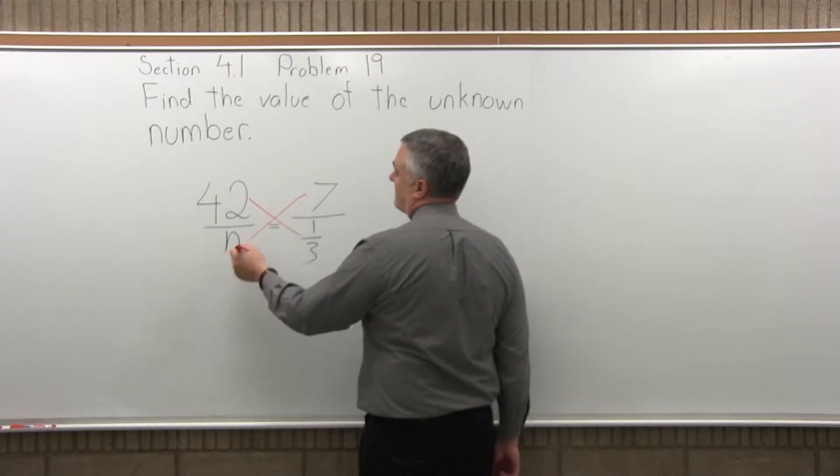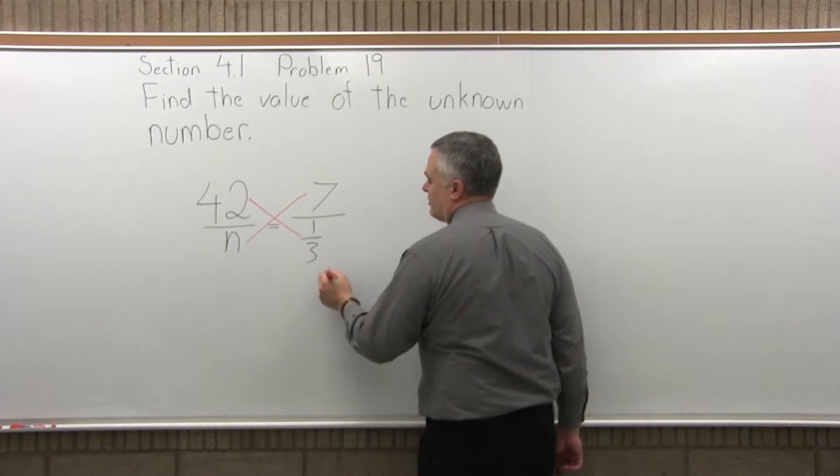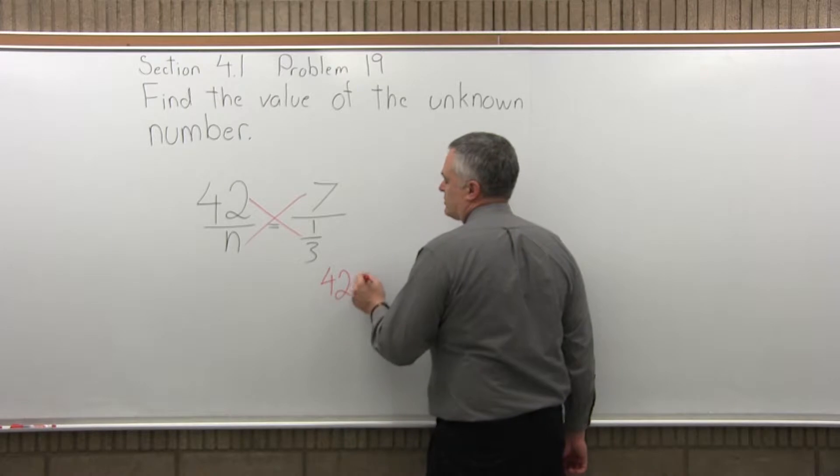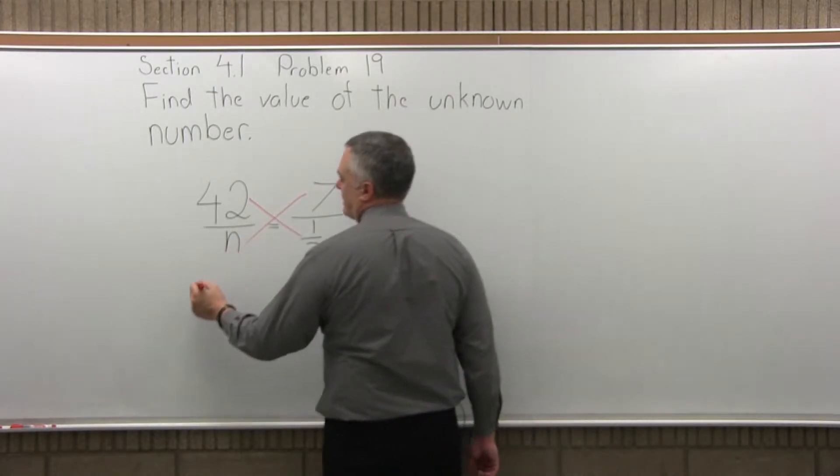You just multiply across both ways and divide by the number in front of the n. So coming one way, I'll have 42 times one-third, and then the other multiplication will be 7 times n.